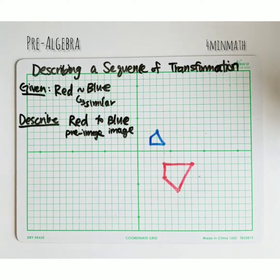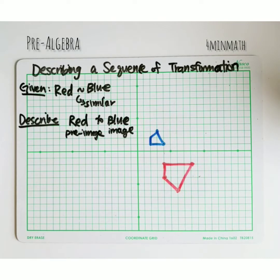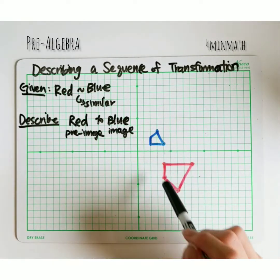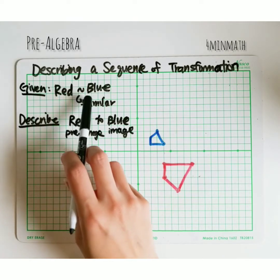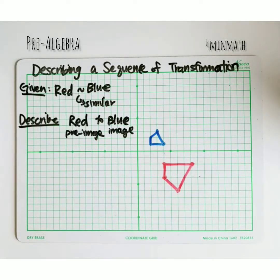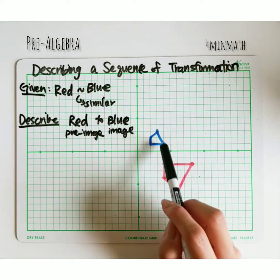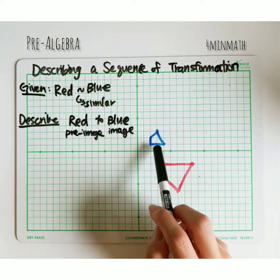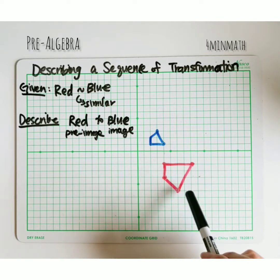Welcome to today's lesson. It's going to be all about describing a sequence of transformations where you're given two figures and you're trying to figure out what happened — from pre-image to image — for different transformations that took place. In this question we were given the red figure and the blue figure, and we were told that these two are similar, noted using the similarity symbol. The question asks: describe a sequence of transformations in which the blue figure is the image of the red figure. So blue is not the original — the red is. What happened from red to blue?